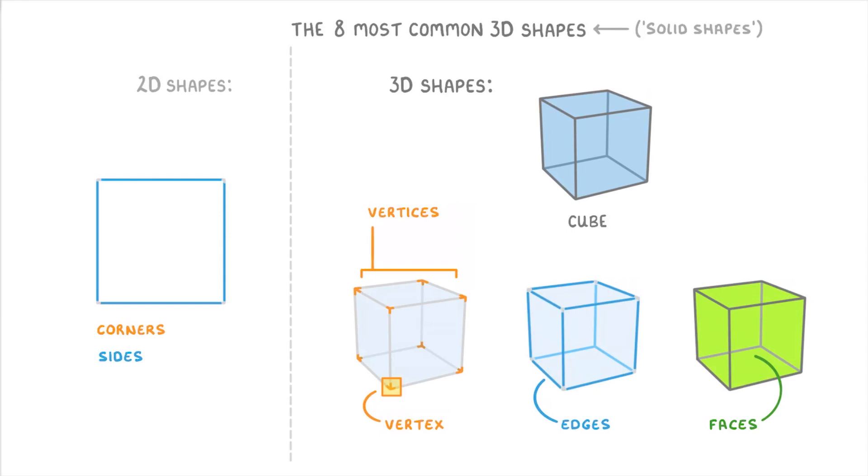So if we look at our cube, this has a total of 8 vertices, because it has 4 at the top and 4 at the bottom, 12 edges, because it has 4 at the top, 4 around the middle, and 4 at the bottom, and 6 faces.